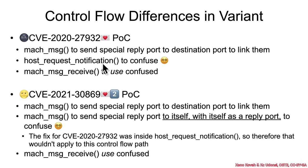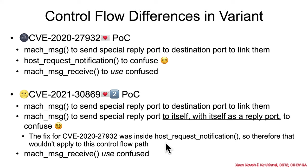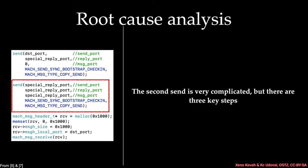Because the actual fix for the previous vulnerability was placed into host_request_notification, and this variant takes a different control flow path instead, that fix has no bearing on this vulnerability. So you can still cause the confusion, this variant still works, and like the previous one they use mach_msg_receive in order to use the confused data.